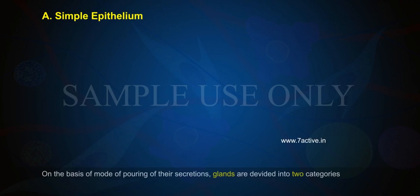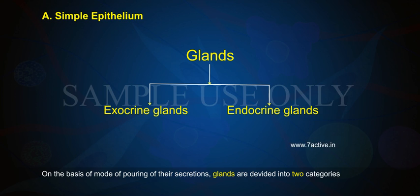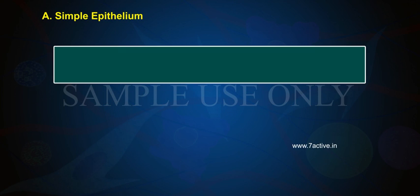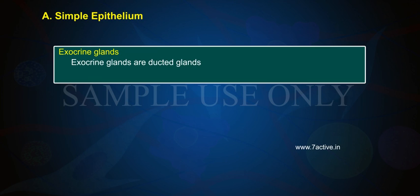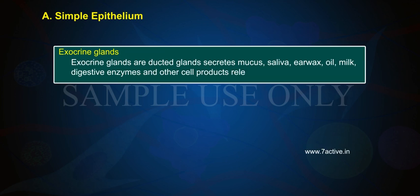On the basis of the mode of pouring of their secretions, glands are divided into two categories: exocrine glands and endocrine glands. Exocrine glands are ducted glands that secrete mucus, saliva, earwax, oil, milk, digestive enzymes, and other cell products released through ducts or tubes.